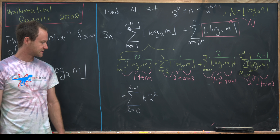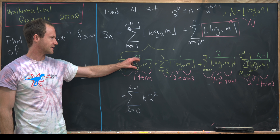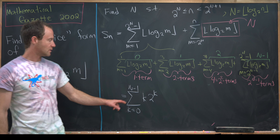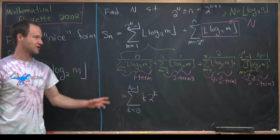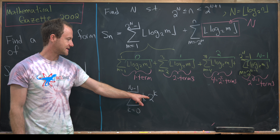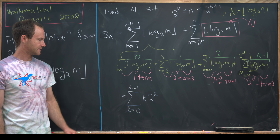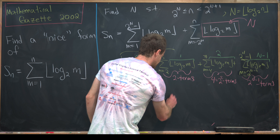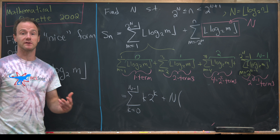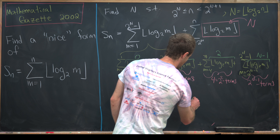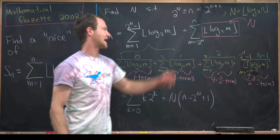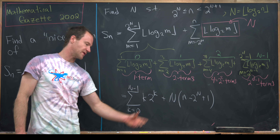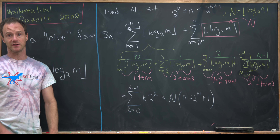Let's verify that makes sense: 0 times 2⁰, then 1 times 2¹, then 2 times 2², with the last term being N minus 1 times 2^(N-1). The second piece simplifies to capital N times the number of terms, which is n minus 2^N plus 1. Now we need to find a closed form for the sum Σ k·2^k, which is doable with some calculus tricks.